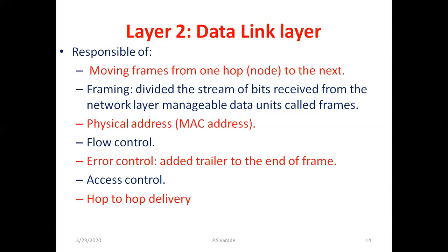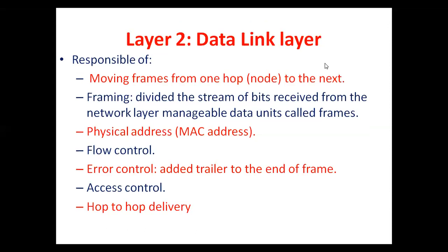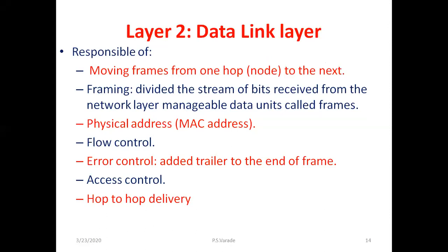Framing means dividing the stream of bits received from the network layer into manageable data units called frames. Sometimes the network layer package is very big and cannot be directly transmitted through the physical layer, so the data link layer breaks it into frames. If a packet is lost, only a little data is lost rather than everything. A packet consists of many bits; frames are smaller chunks of bits.